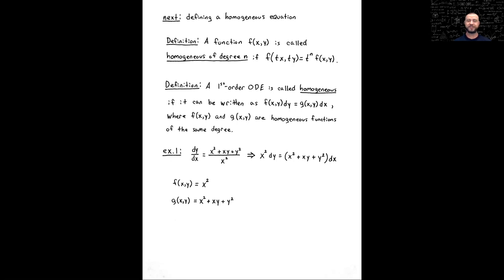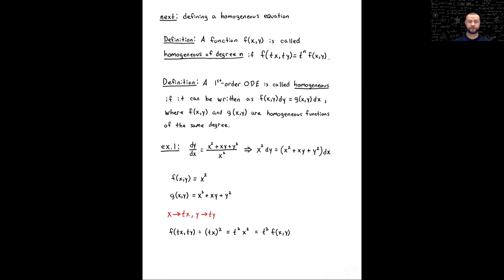Let's check using the technical definition. We're going to replace in both functions x with tx and y with ty. For the function f, this is pretty simple since there's only x squared. We replace x with tx, get (tx) squared, and apply basic exponent rules. We've now expressed this as a factor of t squared out front times the original function. So t squared times x squared — this is homogeneous of degree 2, and that power of t tells you the degree.